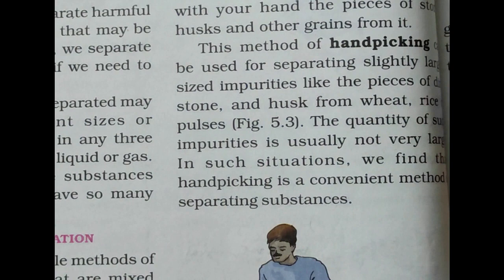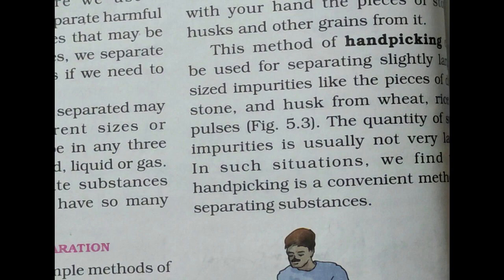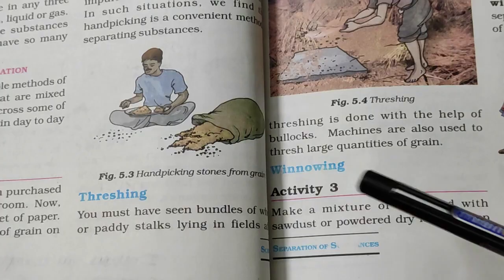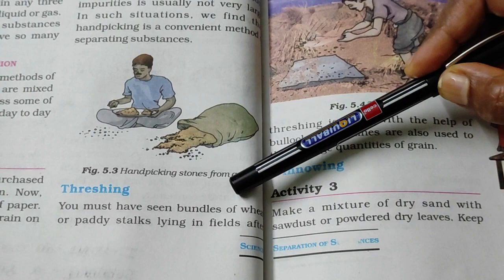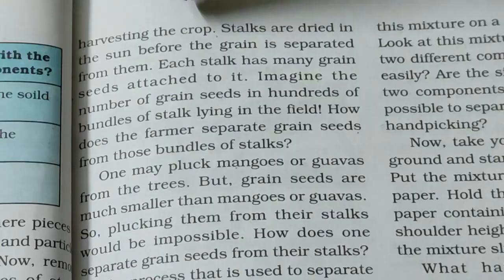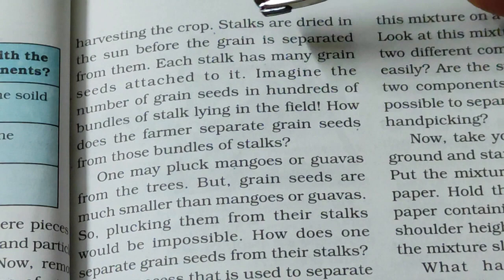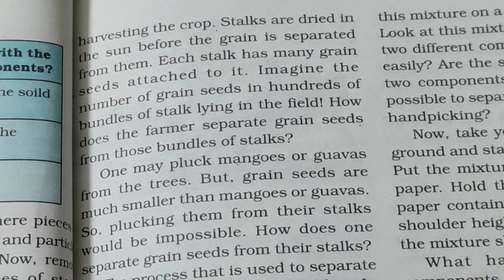The next method is threshing. We must have seen bundles of wheat or paddy stocks lying in fields after harvesting. The stocks are dried in the sun before the grain is separated. Each stock has many grains attached at its tip.